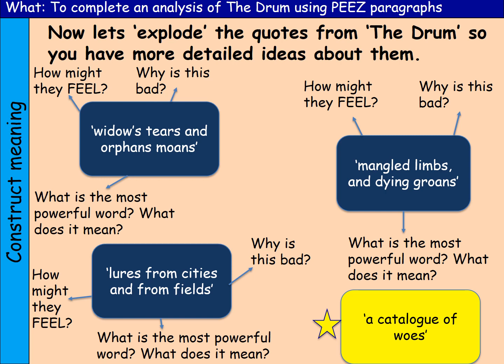Why is it bad? Obviously because if they're widows and they're now orphans, then a family member has actually died and will not be coming back. The most powerful word — and obviously this is down to personal choice — I would say is the noun 'moans', because moans makes me think that someone is suffering either physical or mental pain. To me, that's quite powerful to think of the agony that these people are going through, having lost their loved ones.